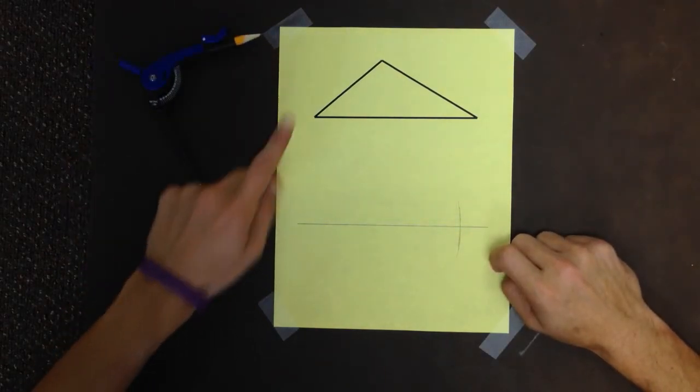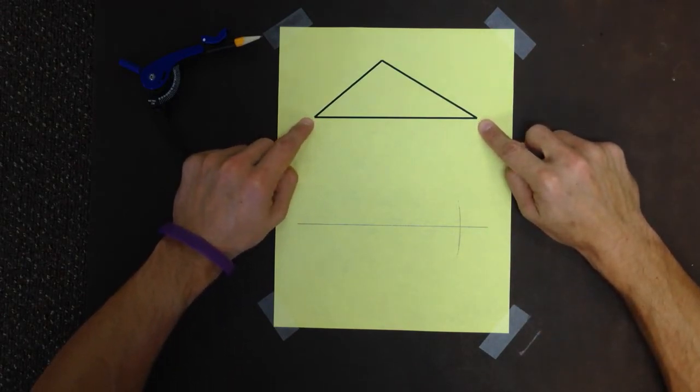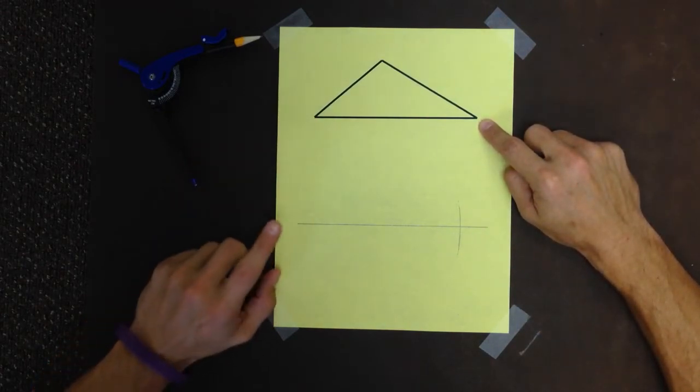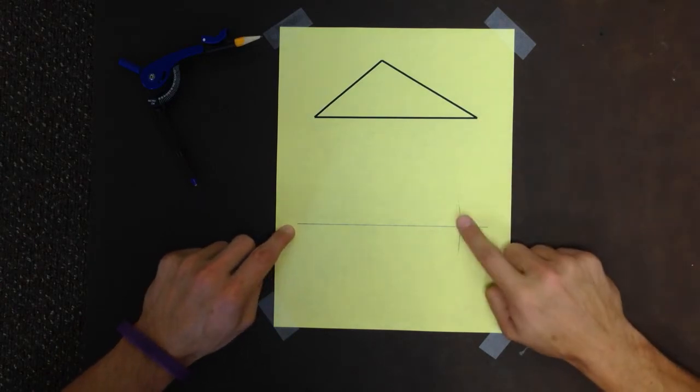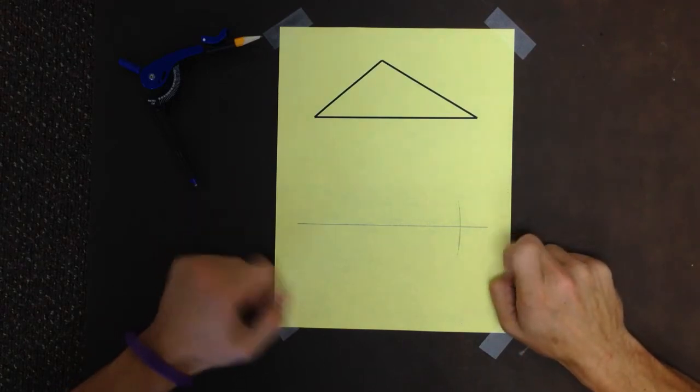Pretty simple. So the distance from that vertex to that vertex on my original triangle is the same distance as from the end of the line I drew to where the arc intersects my line. Got it. I have my side, my first one.